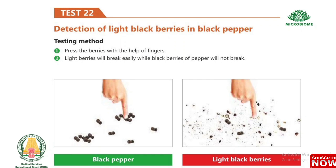Test 22: Detection of light blackberries in black pepper. Press the berries with the help of fingers. Light berries will break easily, while genuine black pepper berries will not break.